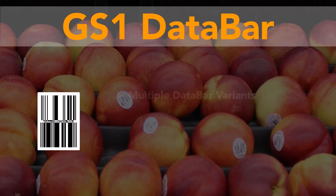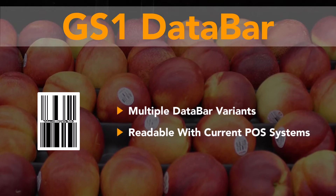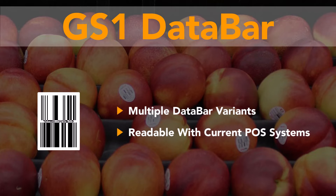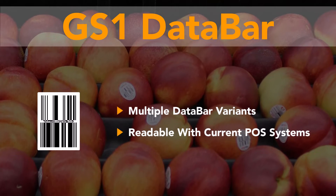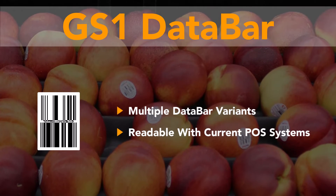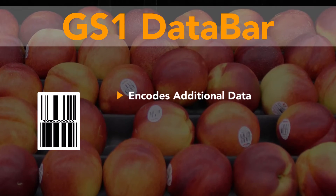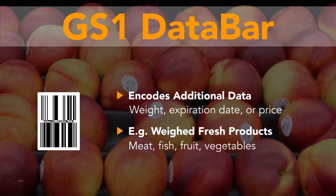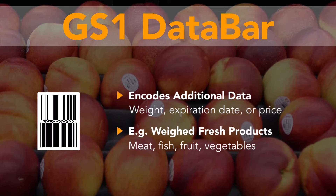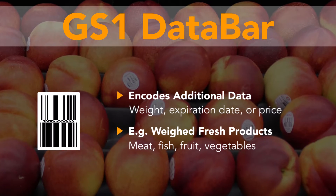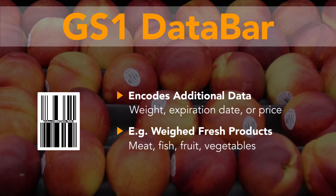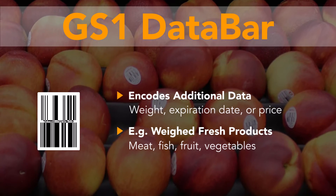GS1 Data Barcodes come in several variants and are usually readable with current POS systems. Certain GS1 Data Barcodes allow the encoding of additional data, such as weight, expiration date, or price.